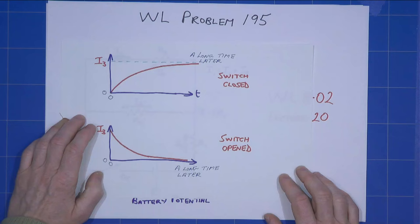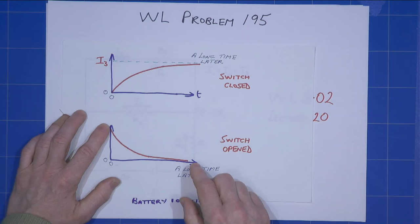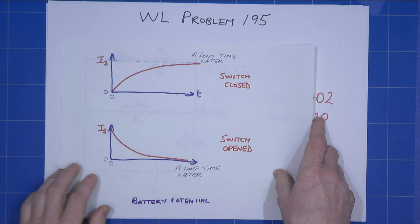Similarly, when we open the switch, the current in i3 will fall from whatever it was here. It will fall down and eventually, if we just leave the switch open, it will end up going back to zero. So that's basically what happens.